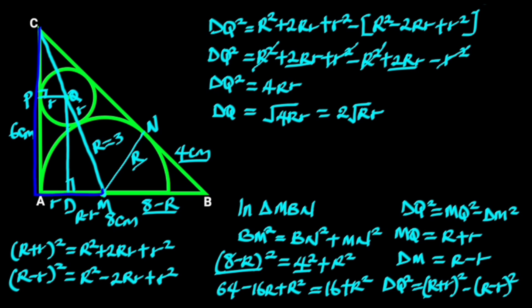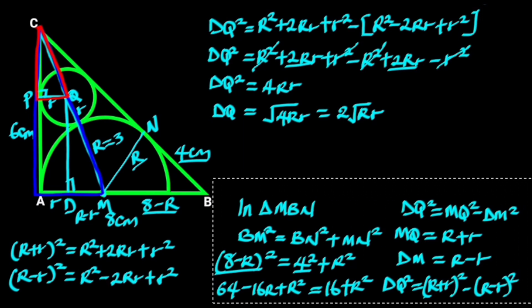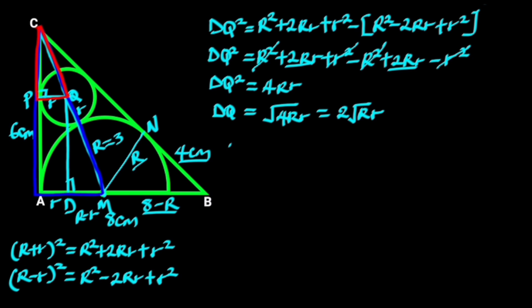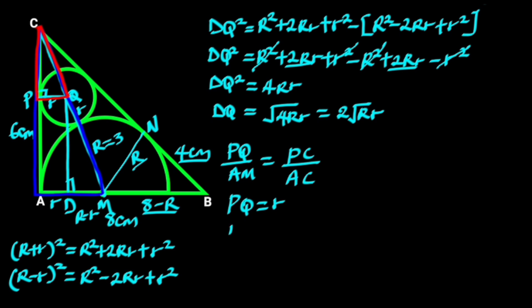Let's consider triangle AMC and triangle QPC. Line PQ and line AM are parallel. Hence, triangle AMC and triangle QPC are similar triangles. From similar triangles, PQ over AM equals PC over AC. From the figure, PQ equals lowercase r (the radius of the circle), AM equals uppercase R (the radius of the semicircle).